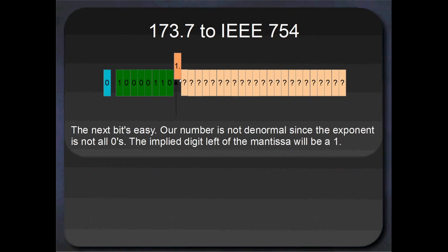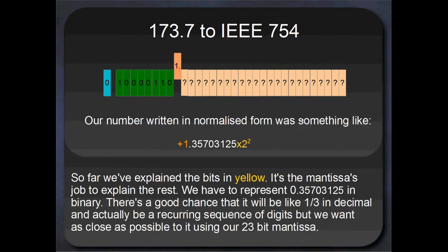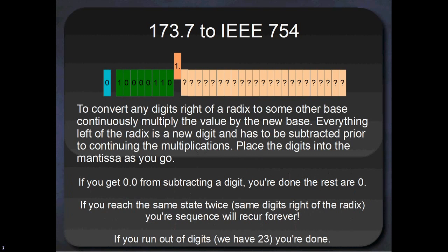The next bit's really easy. Our number's not denormal — there's something in the exponent field, we've got a bunch of 1s — so the implied bit in the mantissa is going to be a 1. The number we've written so far is positive 1.something multiplied by 2 to the power of 7. With these first three parts we've explained all of the bits coloured yellow, and it's the mantissa's job to explain the rest — these 23 bits are going to explain the remaining portion.